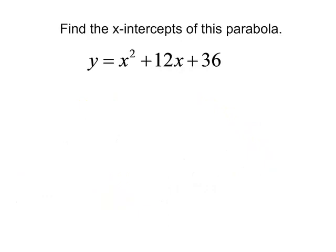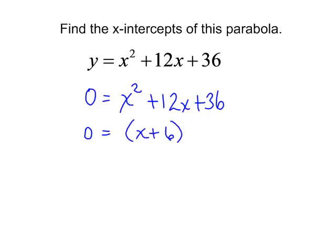Find the x-intercepts of y equals x squared plus 12x plus 36. I will let y equals zero. You may notice that this is a perfect square trinomial, x plus 6 squared. If not, I could continue factoring it, x plus 6 times x plus 6, which is the same thing as x plus 6 squared.